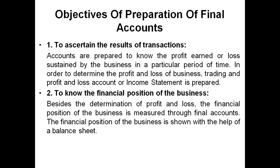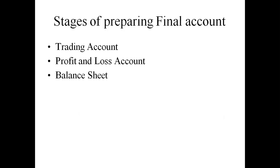Moving ahead, what are the stages of preparing Final Accounts? In Final Accounts we'll be preparing the Trading Account, Profit and Loss Account, and Balance Sheet. The Trading Account is the account which is prepared to know the gross profit or gross loss. All the expenses which are directly related to procurement of raw material and converting raw material into finished product are recorded into the Trading Account.